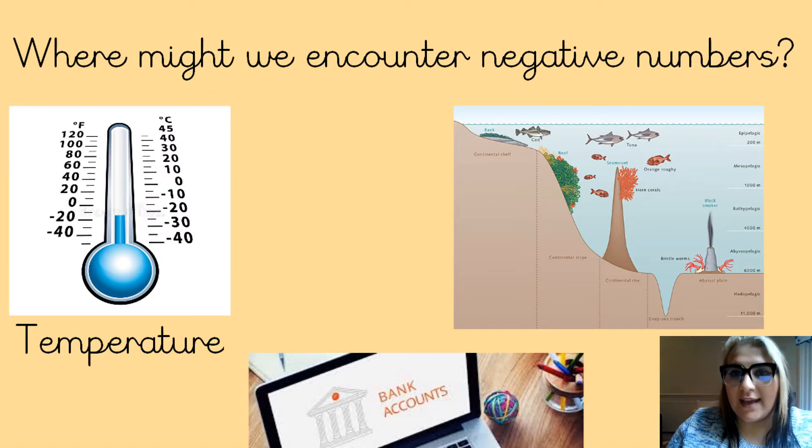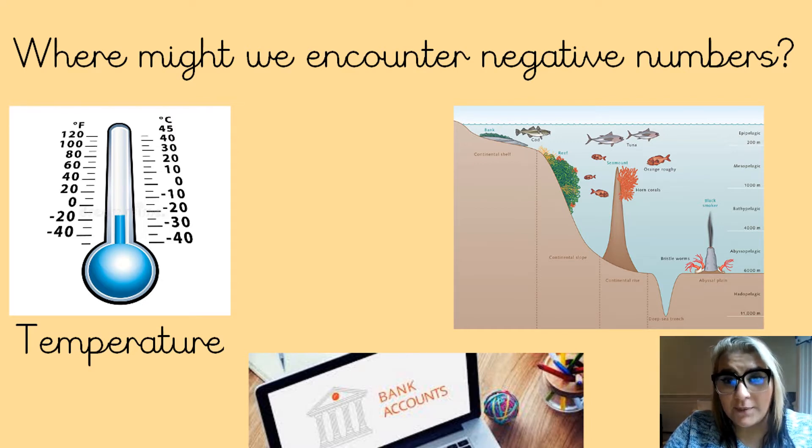Where might we have encountered negative numbers before? You might have seen it on the temperature, so if something is minus four degrees, we know it's very cold. Below sea level, things are minus this, minus that. Or, in a bank account, when you have no money, you've got minus £20,000.